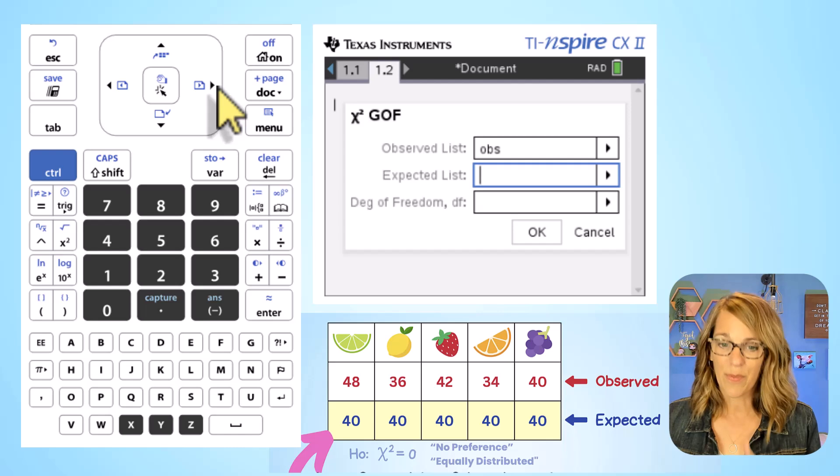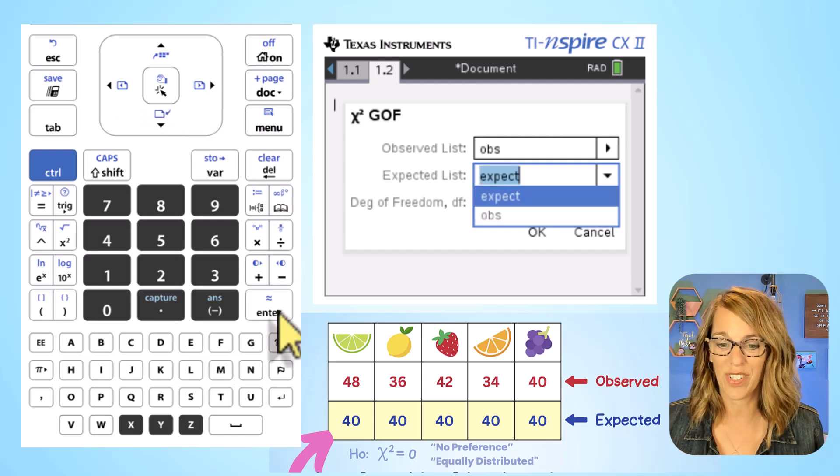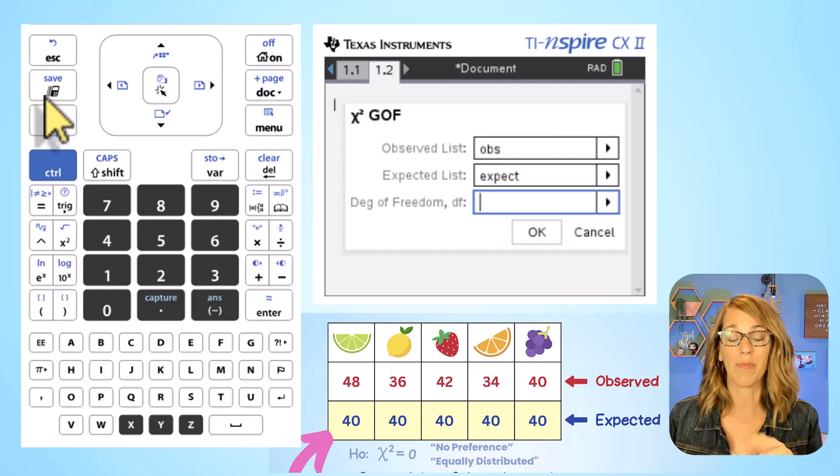Tabbing down to the next choice, right arrow, this is my expected value, so let's arrow down to choose that one and then enter. And then tabbing down, it wants the degrees of freedom, so I've got one more really quick calculation here to make.